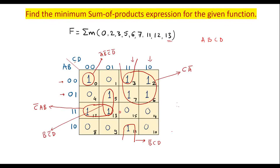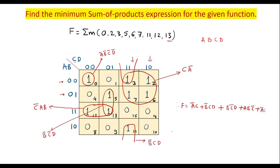All 1s are now covered, so we stop. The simplified expression is: f = A-bar C + B C-bar D + A B C-bar + A-bar B-bar C-bar D-bar + B-bar C D. This is the minimum sum-of-products expression for the given function. Thank you for watching.